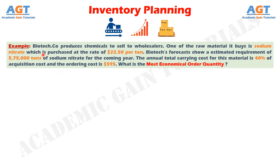The problem states that Biotech Corporation produces chemicals to sell to wholesalers. One of the raw materials it buys is sodium nitrate, purchased at the rate of $22.50 per tonne. Biotech's forecasts show an estimated requirement of 575,000 tonnes of sodium nitrate for the coming year. The annual total carrying cost for this material is 40% of acquisition cost and the ordering cost is $595.